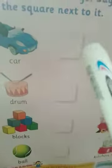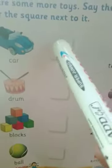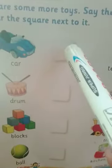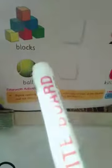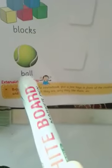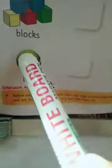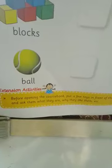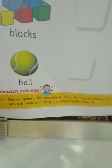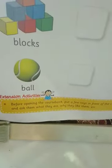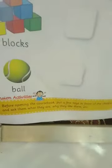blocks. And what you have to do is color it. Today we will read some other toys. It is ball — B-A-L-L. What is this? This is a ball. Ball is a toy. It is round in shape. We can catch the ball, we can drop the ball, we can throw the ball.